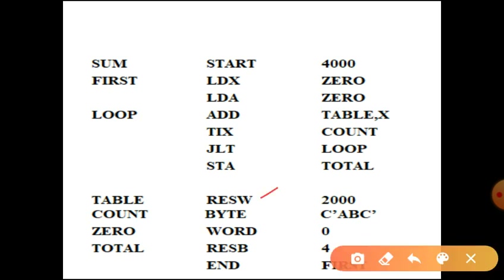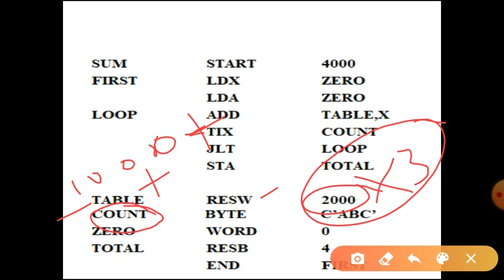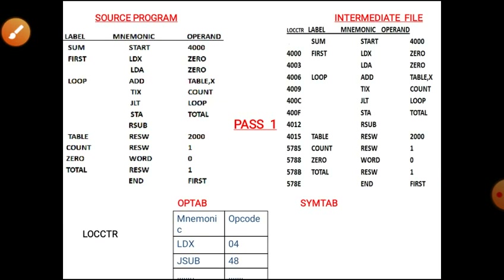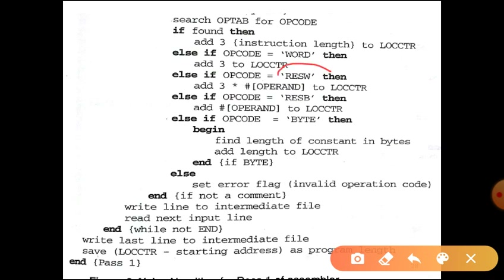If it is RESW, take the operand — for example 2000 — multiply it by 3, and add the result to LOCCTR. So if LOCCTR is 1000, you add 1000 + (2000 × 3) and assign the result to the location counter for the next symbol. This is what the algorithm specifies: if RESW, multiply 3 by the operand and add it to LOCCTR.